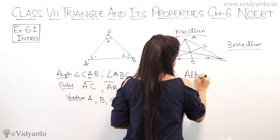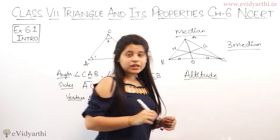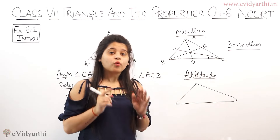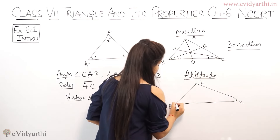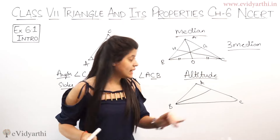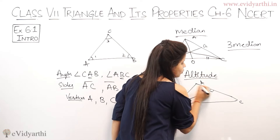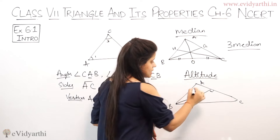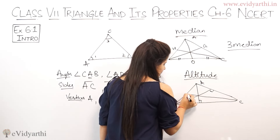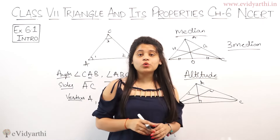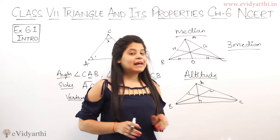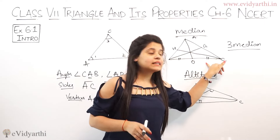Next comes altitude. What is altitude? Again let's take a triangle ABC. Altitude is also a line segment from a vertex, but instead of going to the midpoint, it goes perpendicular to the opposite side — meaning it makes a 90-degree angle. So from B to side AC it is perpendicular, from A it is perpendicular, and from C it is perpendicular to AB. So altitude passes from the vertex and is perpendicular to the opposite side, while the median cuts at the midpoint.